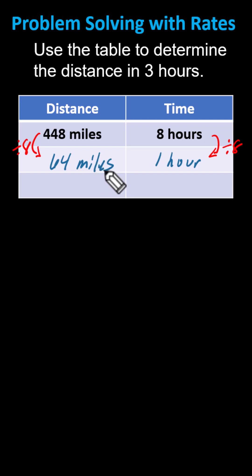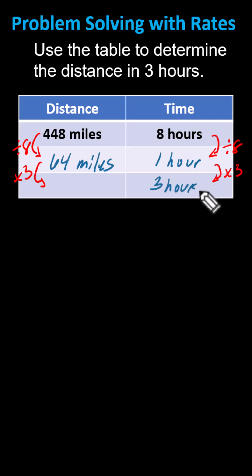Now that we have the unit rate, we can determine the distance traveled in three hours by multiplying both one hour and 64 miles by three. One hour times three, of course, is three hours. And 64 miles times three equals 192 miles.